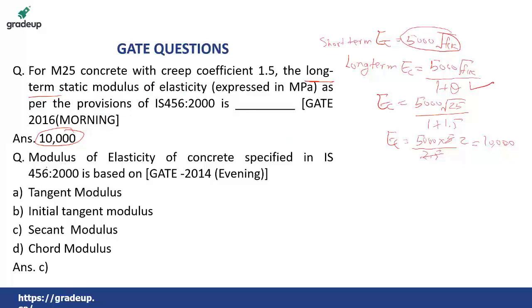The next question, from GATE 2014 evening session: the modulus of elasticity of concrete specified in IS 456-2000 is based on which type of modulus? The options are tangent modulus, initial tangent modulus, secant modulus, and chord modulus. As discussed in the lecture, the answer is secant modulus. The EC in IS 456-2000 is based on the secant modulus.